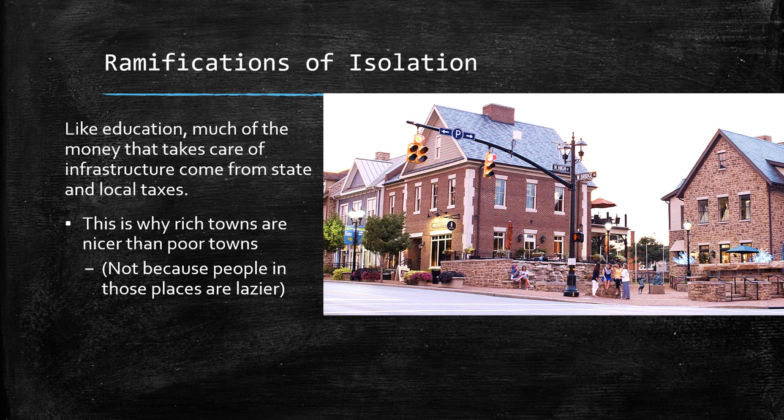It's not because rich people are more industrious. It's not because poor people are lazier or unable to see that things are falling apart. It's that when people own expensive homes, they pay more in taxes, and that money is able to pay for things in those areas. So it's broken in a very similar way to how school funding is broken.